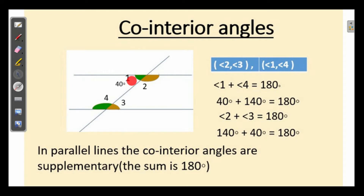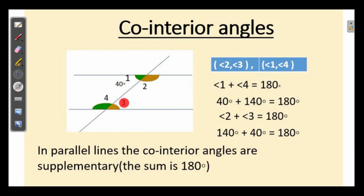This angle is 40 degrees, so angle 2 is 140 degrees — this is a linear pair. Then angle 3 is the alternate interior angle of angle 1, and angles 2 and 4 are alternate interior angles, so these two angles are equal. If angle 1 is 40 degrees, then angle 3 is also 40 degrees. And if angle 2 is 140 degrees, then angle 4 is also 140 degrees.